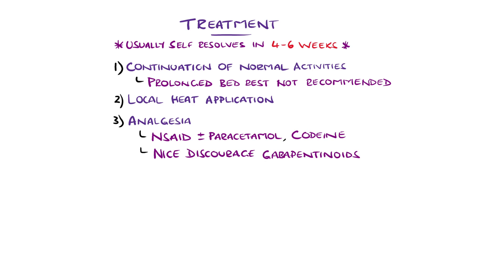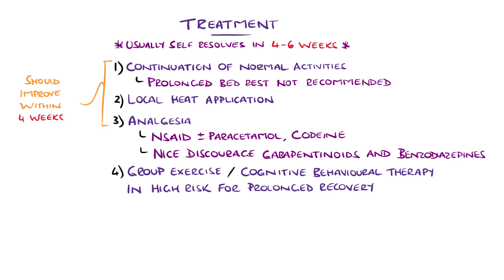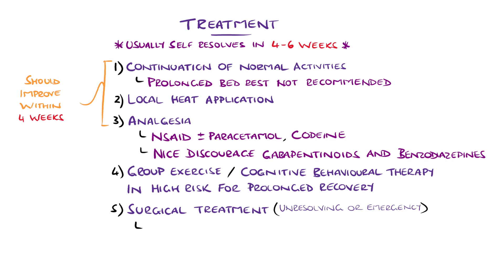NICE advises avoiding gabapentinoids and benzodiazepines, while in other countries like the United States there is some use of these medications. Tools like the STarT Back tool can help gauge the risk of pain and recovery being prolonged, with higher risk cases being considered for group exercise physiotherapy and cognitive behavioural therapy. It is expected that with adequate first-line measures there will be an improvement within four weeks. In cases of unequivocal disc herniation causing progressive symptoms or not resolving, or cauda equina syndrome, surgical treatment is indicated, mostly in the form of a discectomy with laminotomy.